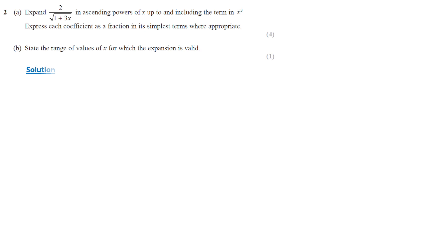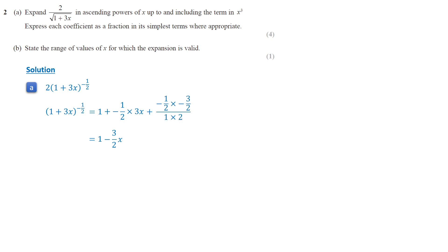In this question, the given expression is equivalent to 2 times (1 plus 3x) raised to the negative half. We will use the binomial expansion to expand (1 plus 3x) to the negative half. The first term is 1. The second term is negative half times 3x, equals negative 3 over 2 times x. The third term is negative half times negative 3 half, over 1 times 2, multiplied by (3x) squared, which equals 27 over 8 times x squared.